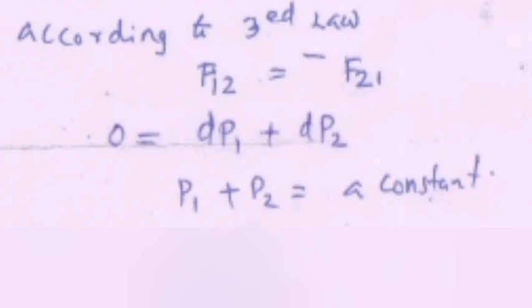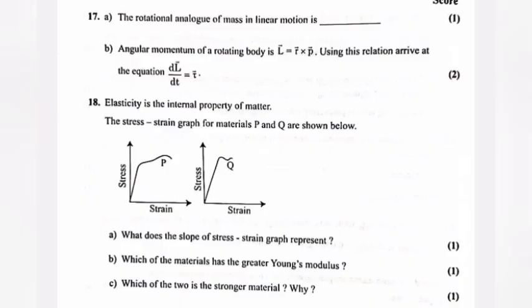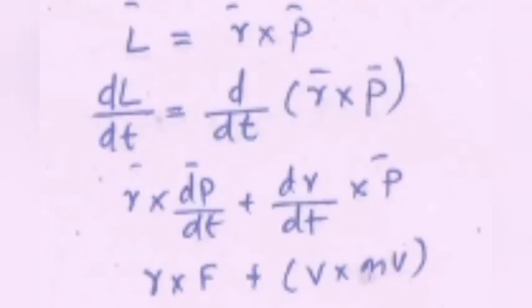Question 17a: The rotational analog of mass in linear motion is dash. Answer: moment of inertia. Question 17b: Angular momentum of a rotating body is L equals r into p. Using this relation, arrive at the equation dL by dt equals τ. Answer: L equals r into p. dL by dt equals d by dt (r into p) equals r into dp by dt plus dr by dt into p equals r into F plus v into mv. dL by dt equals torque.